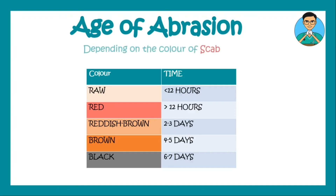The age of an abrasion can also be told by the color of the scab. If the abrasion is raw, then it is less than 12 hours old. If you get a red scab, that means it has crossed 12 hours. If the scab is reddish-brown, that means the abrasion is aged 2 or 3 days. A brown scab represents 4 to 5 days old abrasions. And finally, in 6 to 7 days, an abrasion becomes black. And after 7 days, the abrasion heals completely.